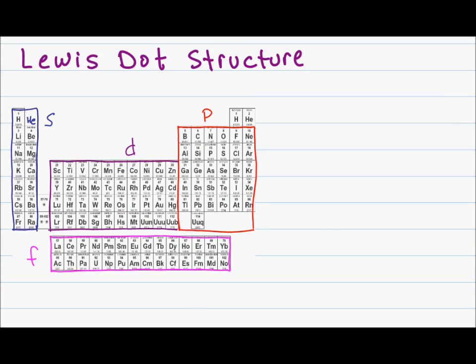And this leads into the final topic of this video, the Lewis dot structure. The Lewis dot structure is a simplified way of showing the valence electrons on a specific atom. So let's take a look at an example.